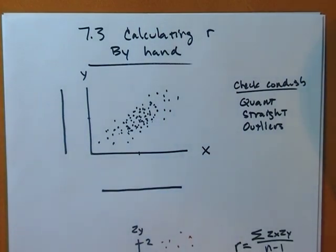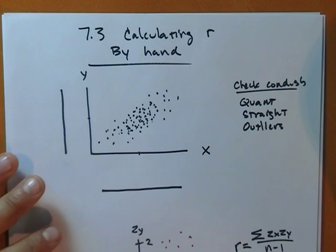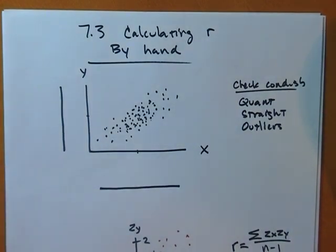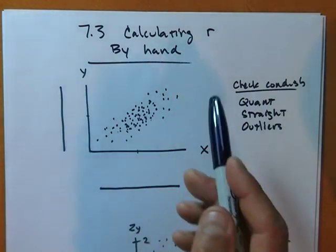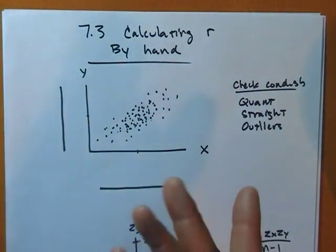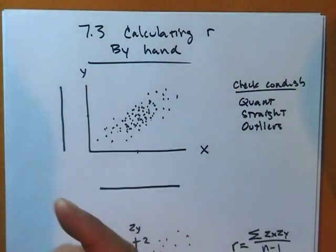I have a scatter plot here. Before I find the R value — which is the correlation coefficient — or do any regression, we need to check conditions: make sure the data is quantitative, it's straight, and there are no outliers. Well, it's straight, there are no outliers, and it's quantitative. This is some number related to some other number, so we're good.